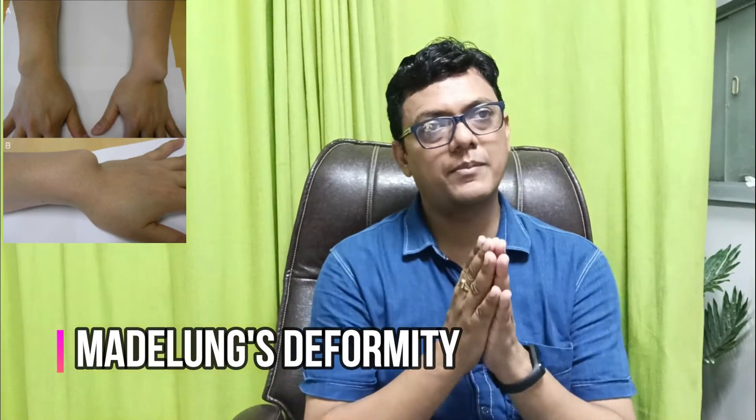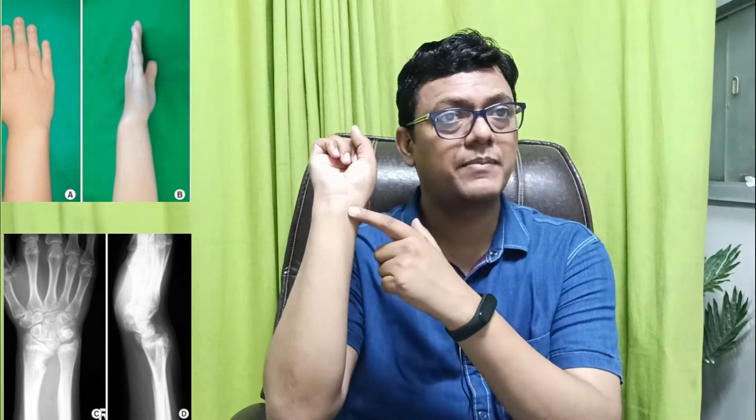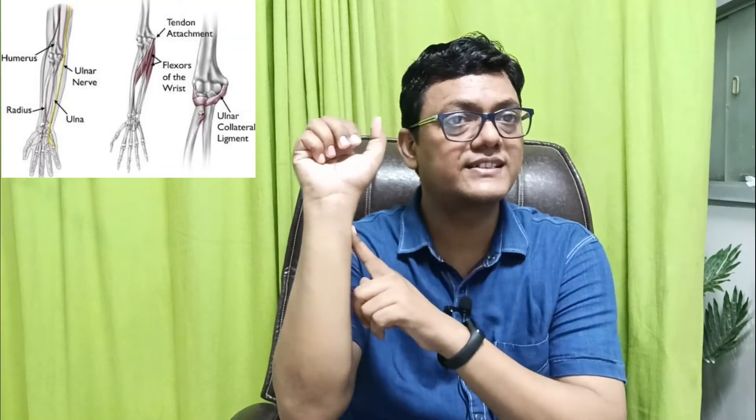Madelung deformity is a problem in the lower end of the radius. There are two parts — the outermost part and the inner part. If there is disturbance in the inner third part of the distal radius, the growth cartilage is stunted, causing overgrowth of the outermost part towards the thumb side. The radius shaft bows backwards and the interosseous space between the ulna and radius increases.